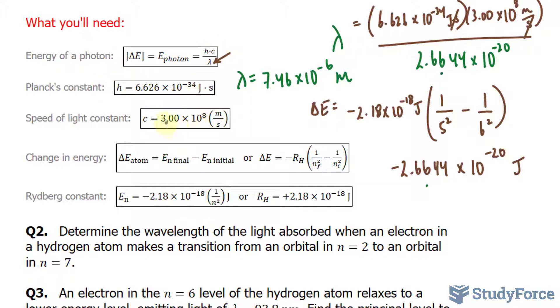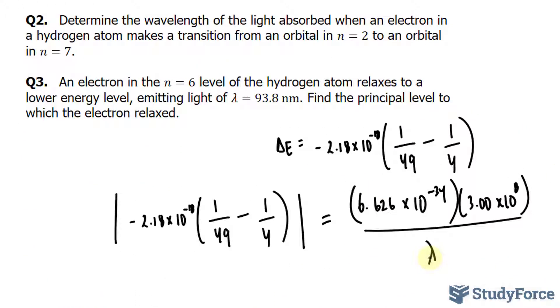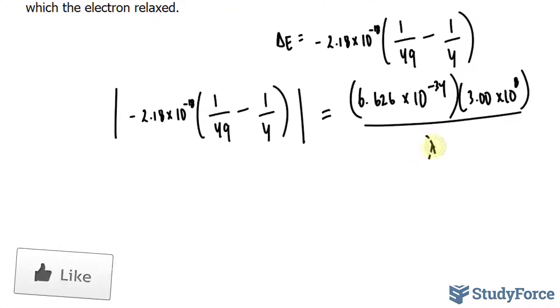And we have h times c over lambda. h is Planck's constant, c is the speed of light. So I'll write those into my equation. Notice that our equation is being filled in. We have Planck's constant, the speed of light.